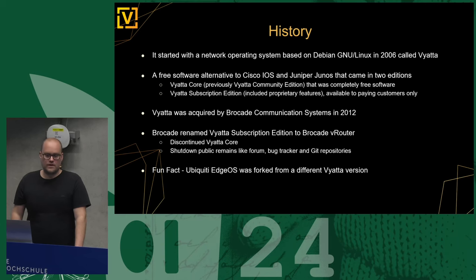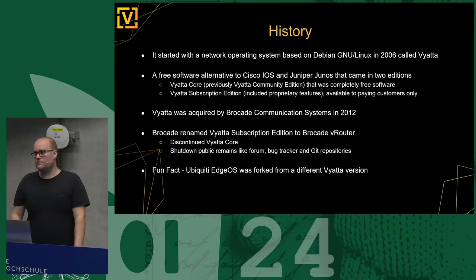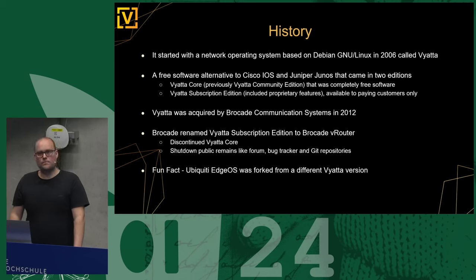Vyatta was acquired by Brocade in 2012. Shortly after, Brocade renamed it to Brocade VRouter, discontinued Vyatta Core, and shut down the Git repositories, public bug tracker, and everything known to the public. Fun fact: those of you using Ubiquiti equipment — Ubiquiti EdgeOS is actually also a fork from Vyatta, just from a different version of the base system.